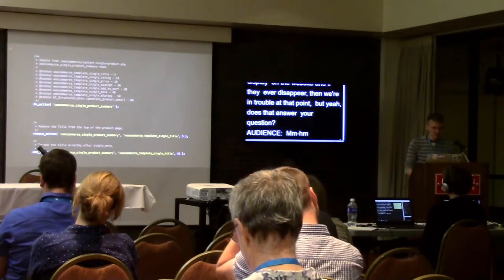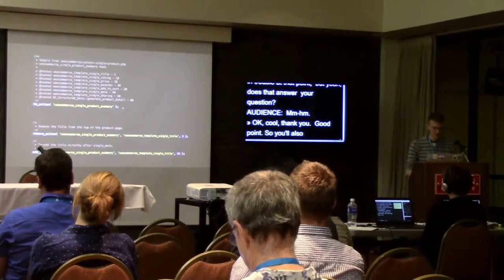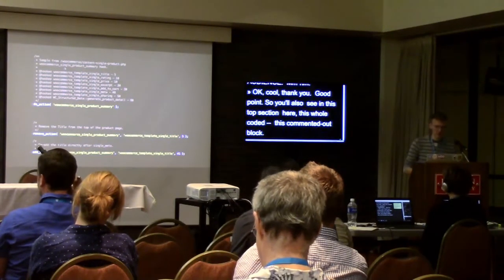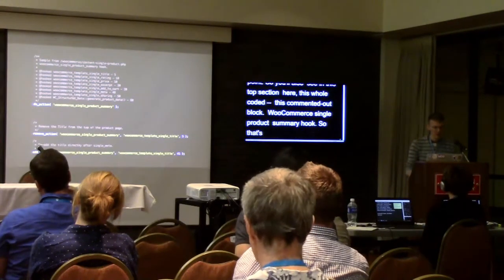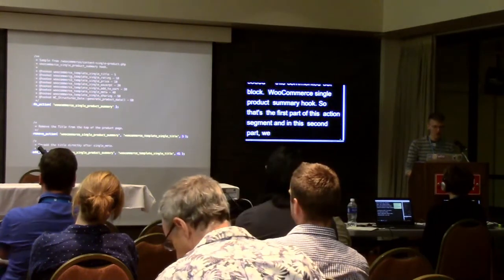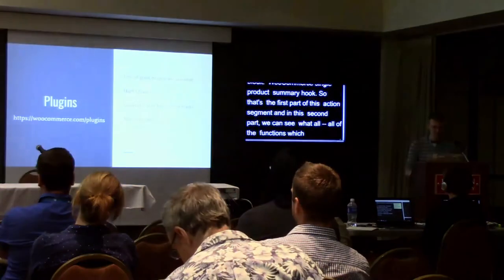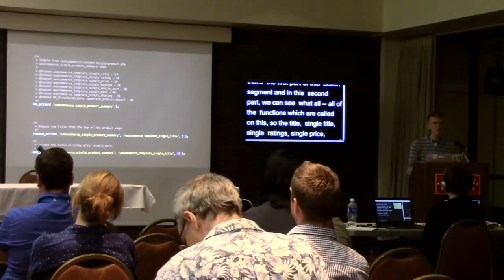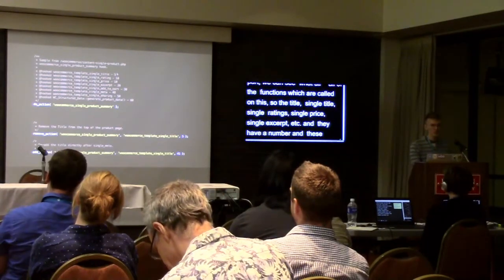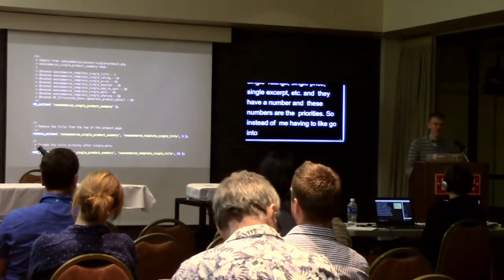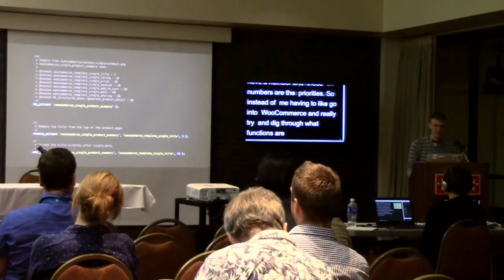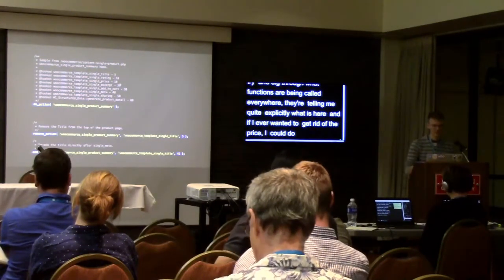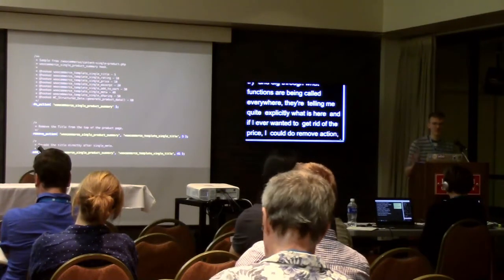You'll also see in the template a commented-out block — 'WooCommerce single product summary hook' — that's the first part of the action segment. In the second part you can see all the functions called on this hook: single_title at priority 5, single_rating, single_price at priority 10, single_excerpt, etc. These numbers are the priorities. WooCommerce tells you quite explicitly what is here. If I ever wanted to remove the price, I could do remove_action, woocommerce_single_product_summary, woocommerce_template_single_price, 10.